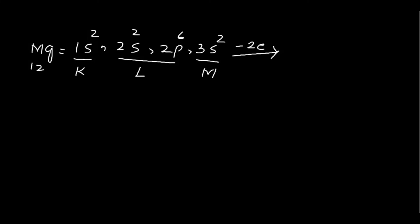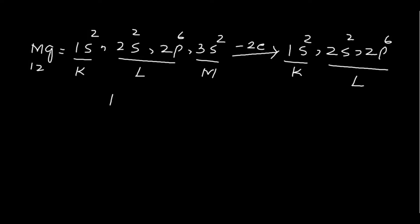After the loss of two electrons, magnesium's electronic configuration becomes 1s² 2s² 2p⁶ — two electrons in the K shell and eight in the L shell. This matches the nearest noble gas, neon, so it becomes stable. We write this as: magnesium loses two electrons to form the magnesium ion Mg²⁺.